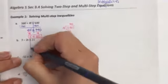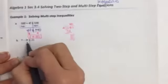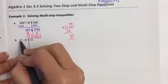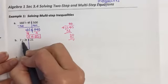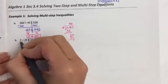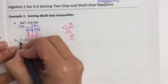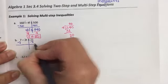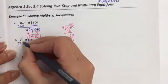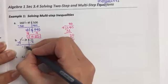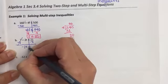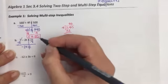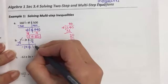The next one. Same thing. You have to get the variable by itself. The T is being, it looks like it's being subtracted but it's really not. I would need to subtract 7 from both sides to get rid of that 7. Minus 2T comes down. Less than or equal to. 21 minus 7 gives us 14.